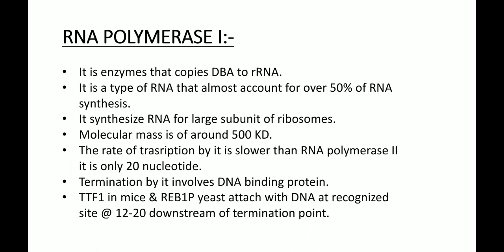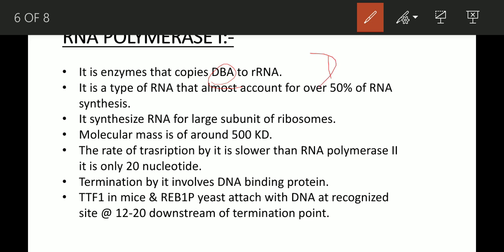RNA polymerase 1 is an enzyme that copies DNA to rRNA. It accounts for over 50% of RNA synthesized and synthesizes RNA for the large subunit of ribosomes. Its molecular mass is around 500 kDa. The rate of transcription is slower than RNA polymerase 2, and termination involves DNA-binding proteins — TTF1 in mice and REB1 in yeast — which attach at 12 to 20 nucleotides downstream of the termination point.